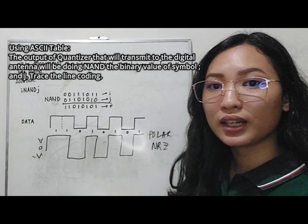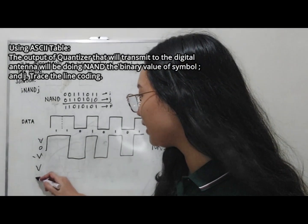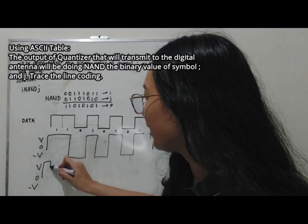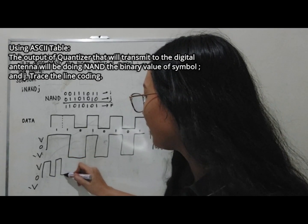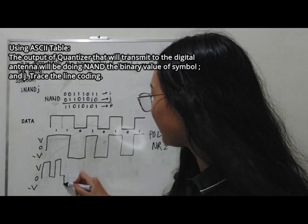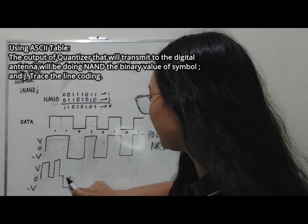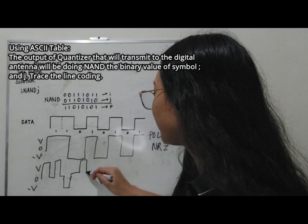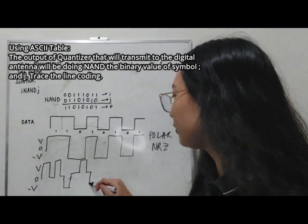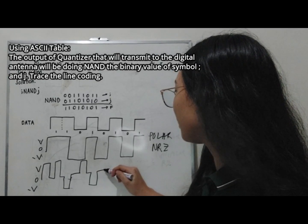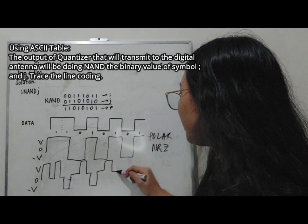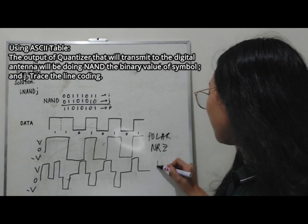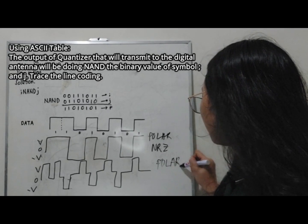For the polar RZ, each 1 is a half-bit positive pulse returning to zero, and each 0 is a half-bit negative pulse returning to zero. For the sequence: half bit positive, back to zero; half bit positive, back to zero; then negative half bit for 0, back to zero; positive half bit, back to zero; negative half bit for 0, back to zero; positive half bit, back to zero; negative half bit for 0, back to zero; positive half bit, back to zero. This is the polar RZ waveform.